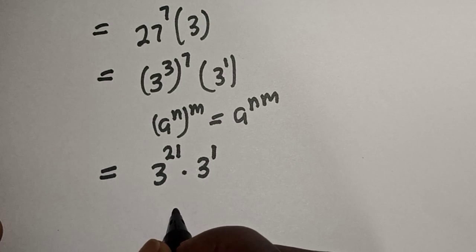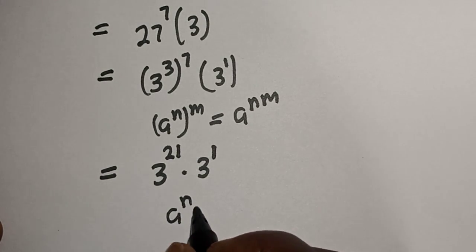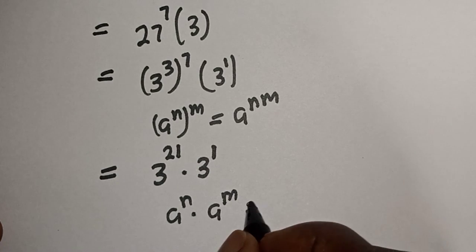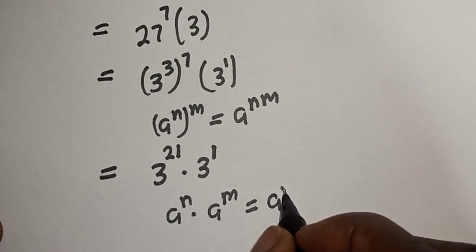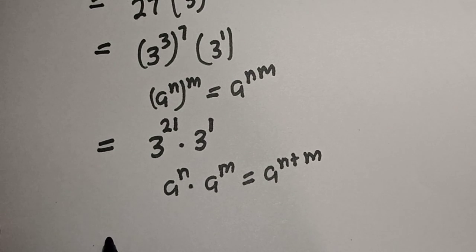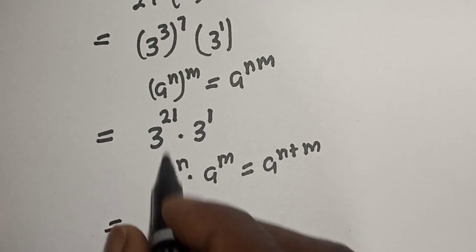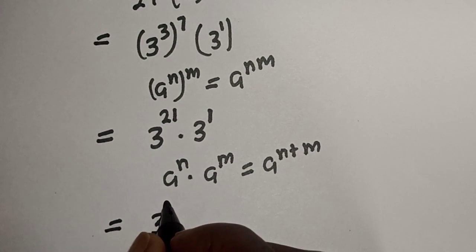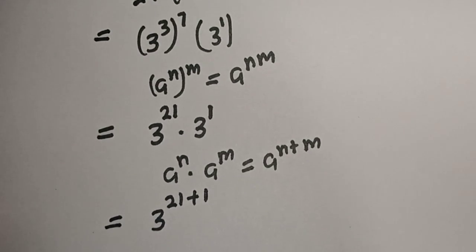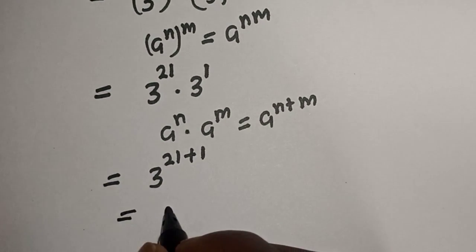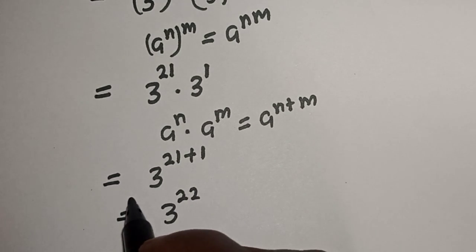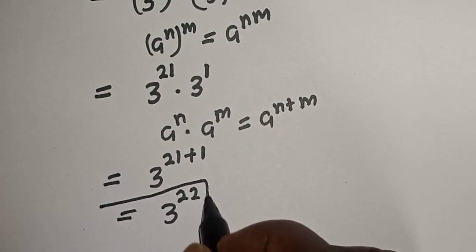Also, if you have a raised to power n multiplied by a raised to power m, then this is equal to a raised to power n plus m. This is equal to 3 raised to power 21 plus 1. This is equal to 3 raised to power 22. And this is the final answer.